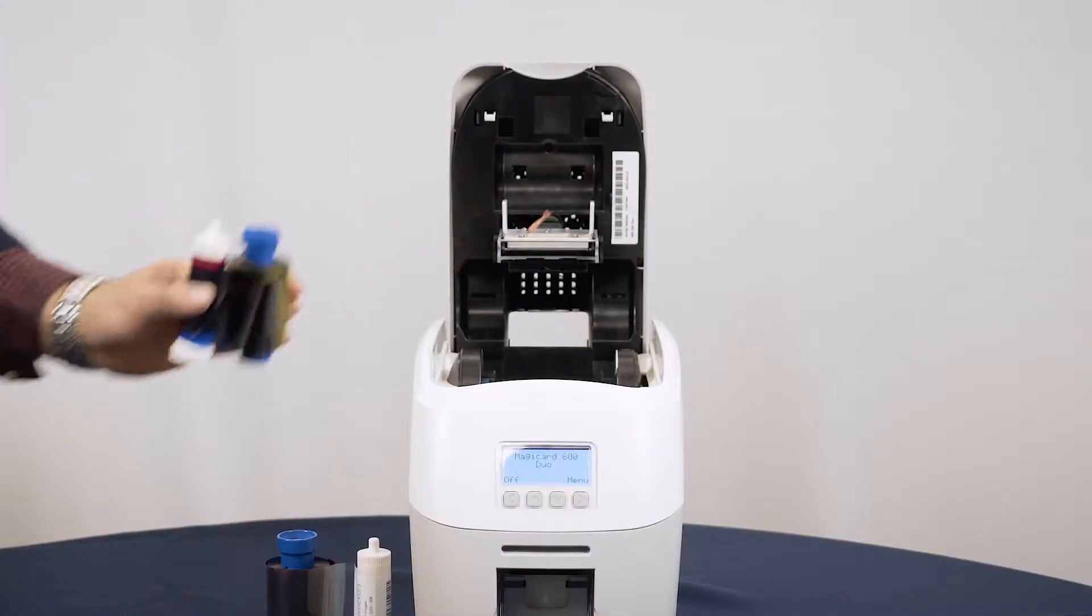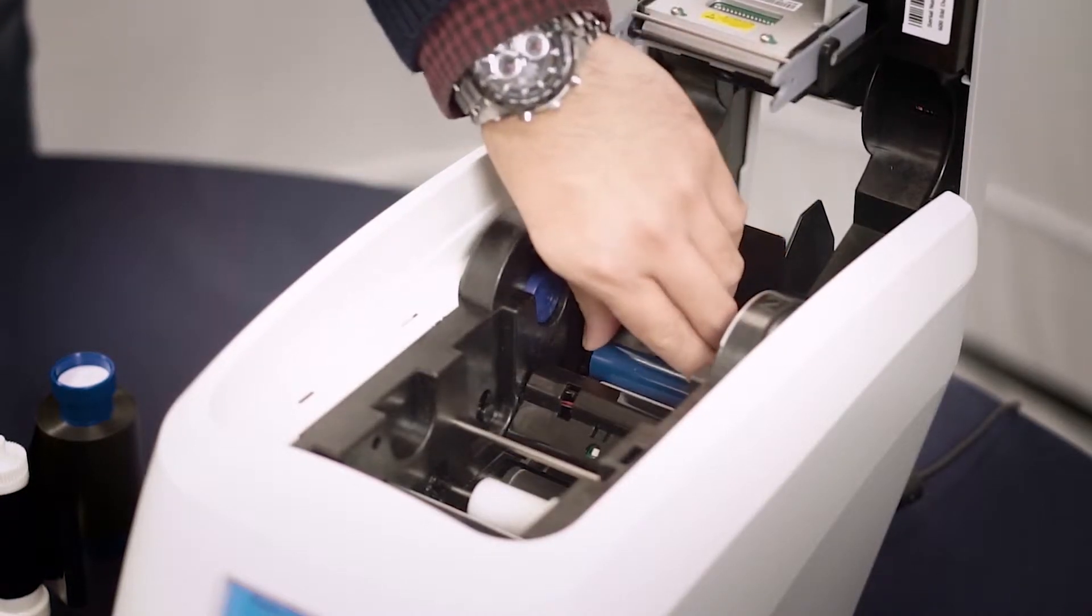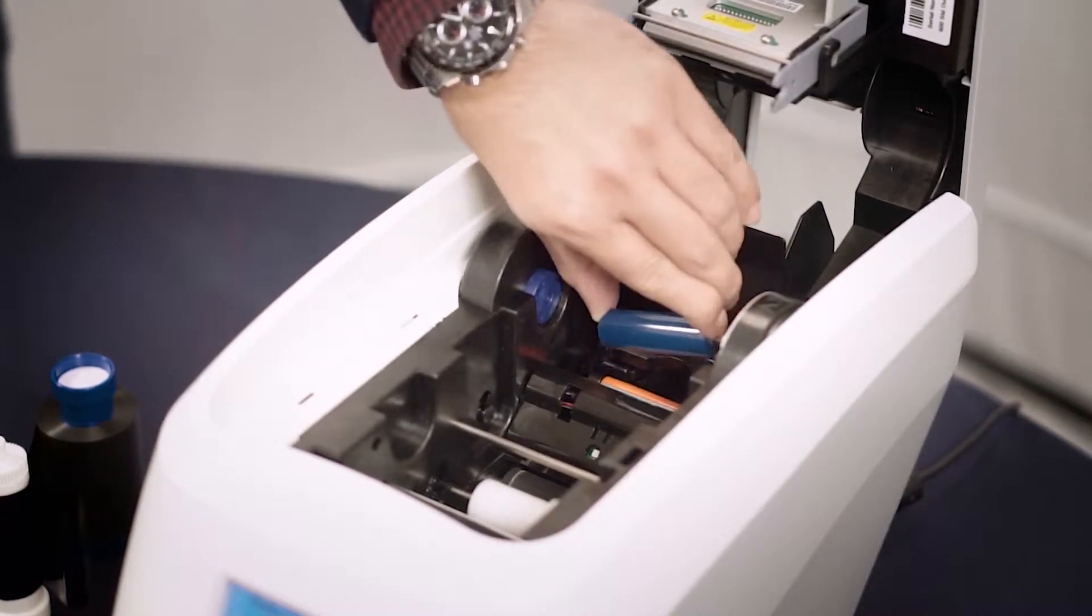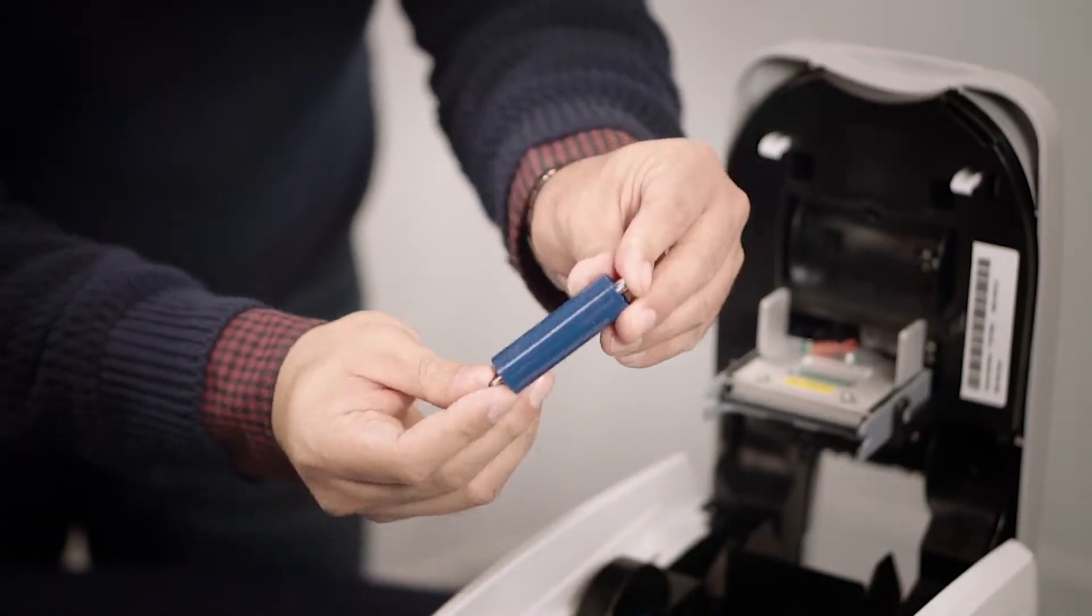Remove the spools and set aside. Discard responsibly. Remove the tacky roller. Take out the inner rod and insert it into a replacement.